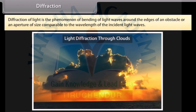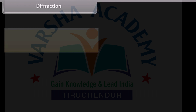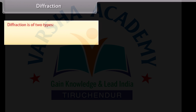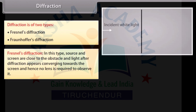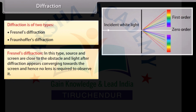Diffraction of light is the phenomenon of bending of light waves around the edges of an obstacle or an aperture of size comparable to the wavelength of the incident light waves. Diffraction is of two types: Fresnel's diffraction and Fraunhofer's diffraction. In Fresnel's diffraction, source and screen are close to the obstacle and light after diffraction appears converging towards the screen, and hence no lens is required to observe it.